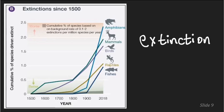Extinction occurs when conditions change so rapidly that a species cannot adapt genetically. Habitat loss is probably the biggest reason extinction occurs — we're wiping out habitat and there's nowhere for organisms to go, especially plants that can't migrate out. However, extinction is a natural process, but you can see in a graph that past the Industrial Revolution in the mid-1800s, the rates of extinctions are increasing much more rapidly.